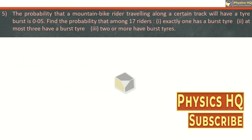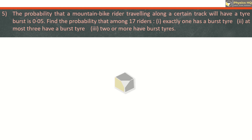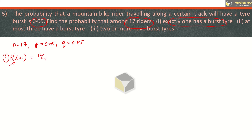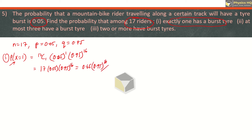The probability that a mountain bike rider traveling along a certain track will have a tire burst is 0.05. Find the probability that among 17 riders — so n = 17, probability of burst P = 0.05, and Q = 0.95. In the first case, the random variable x = 1, denoting the number of tire bursts. This will be 17C1 times p raised to 1 times q raised to 17-1 = 16. So this is 17 into 0.05 into 0.95 raised to 16 as the answer.